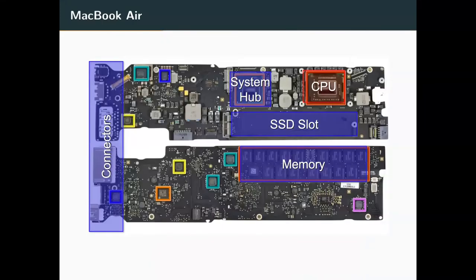Now a very different form factor: this is a MacBook Air, a single chip. We have the CPU, and the memory is basically on the backside. Same things as the server — a bunch of different IO things, a Wi-Fi chip, and a slot for an SSD because we still need a hard drive or something that emulates one.